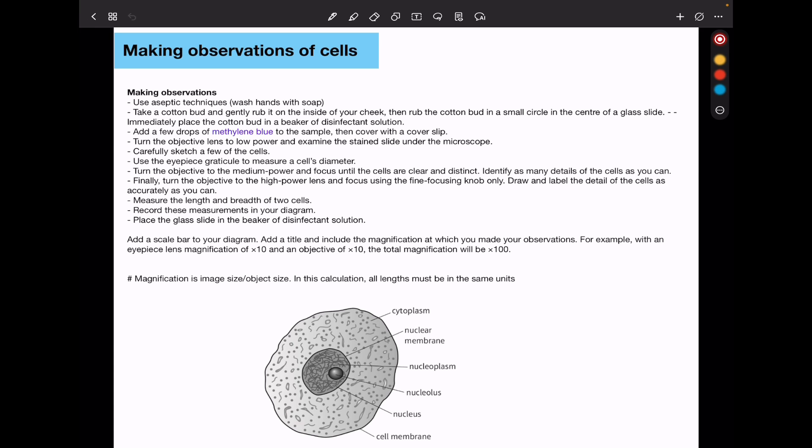You'll turn the objective lens to low power. Like again, we observe under low power first so that we can locate. So under low power and examine the stained slide under the microscope, you could locate and then carefully draw or sketch the cells that you observe. Then you could use the eyepiece graticule to measure the cell's diameter. This is similar to what we saw when we were calibrating. You turn the objective to medium and focus until the cells are clear and distinct. Then you identify as many details as possible. You could also draw what you see.